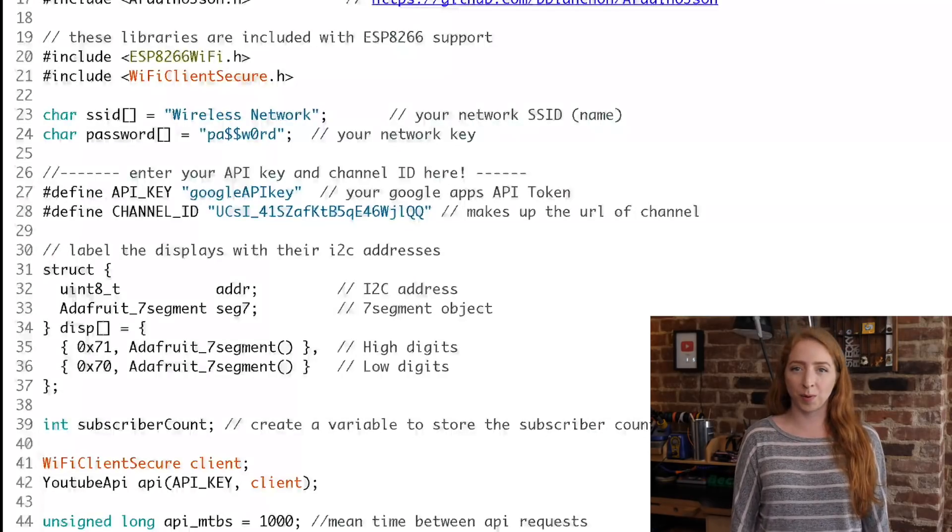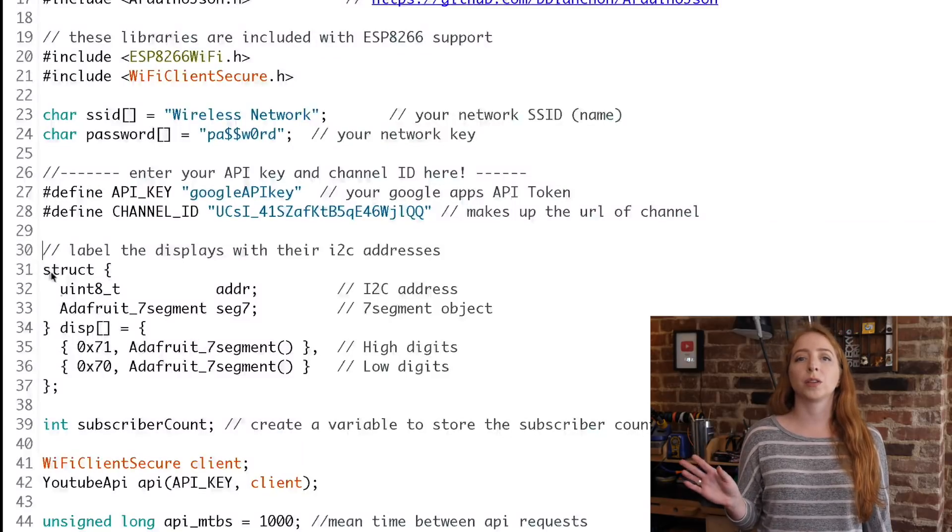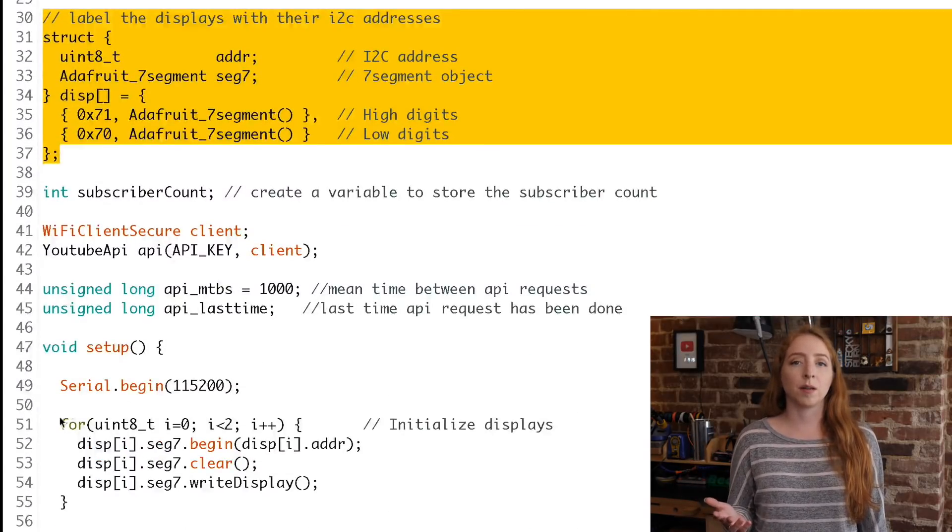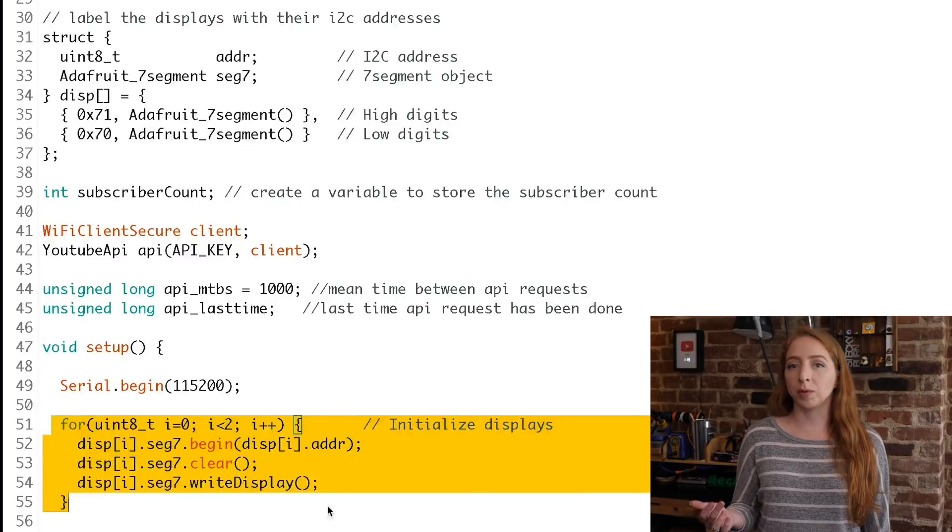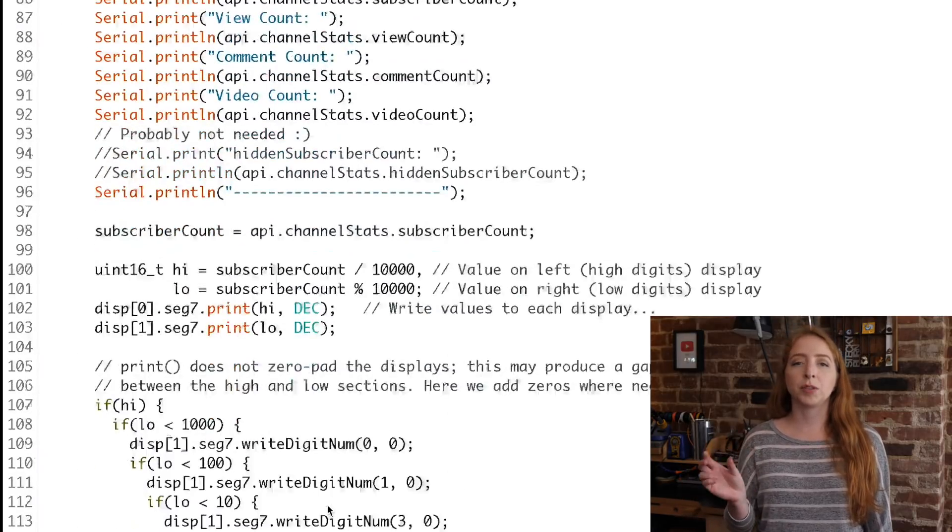To write out the number across both displays, first I'll set them up with their corresponding addresses and initialize them in the setup. Then when it comes time to display the subscriber count, I'll split it up into two variables.